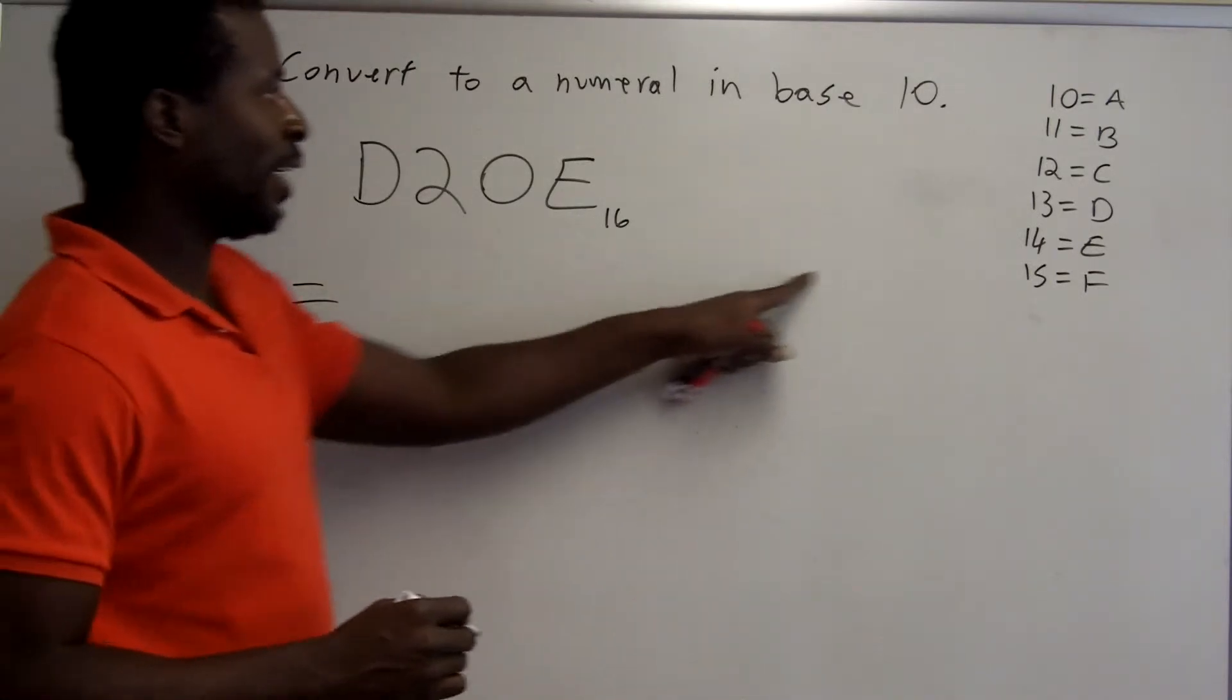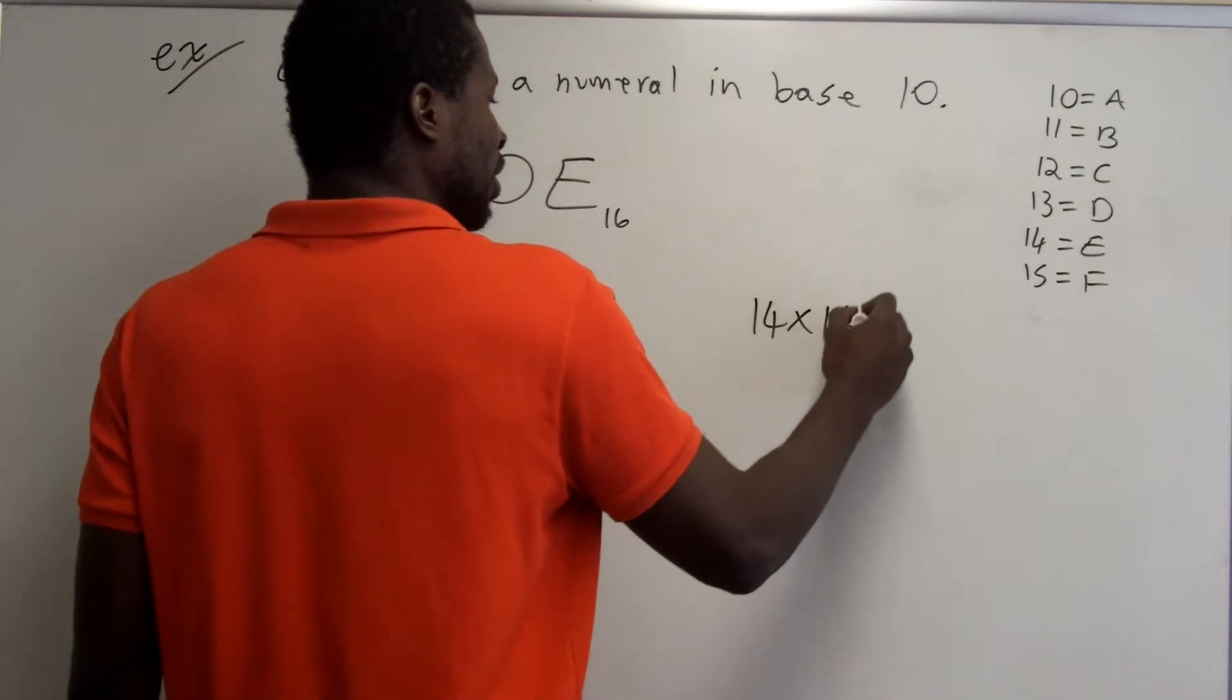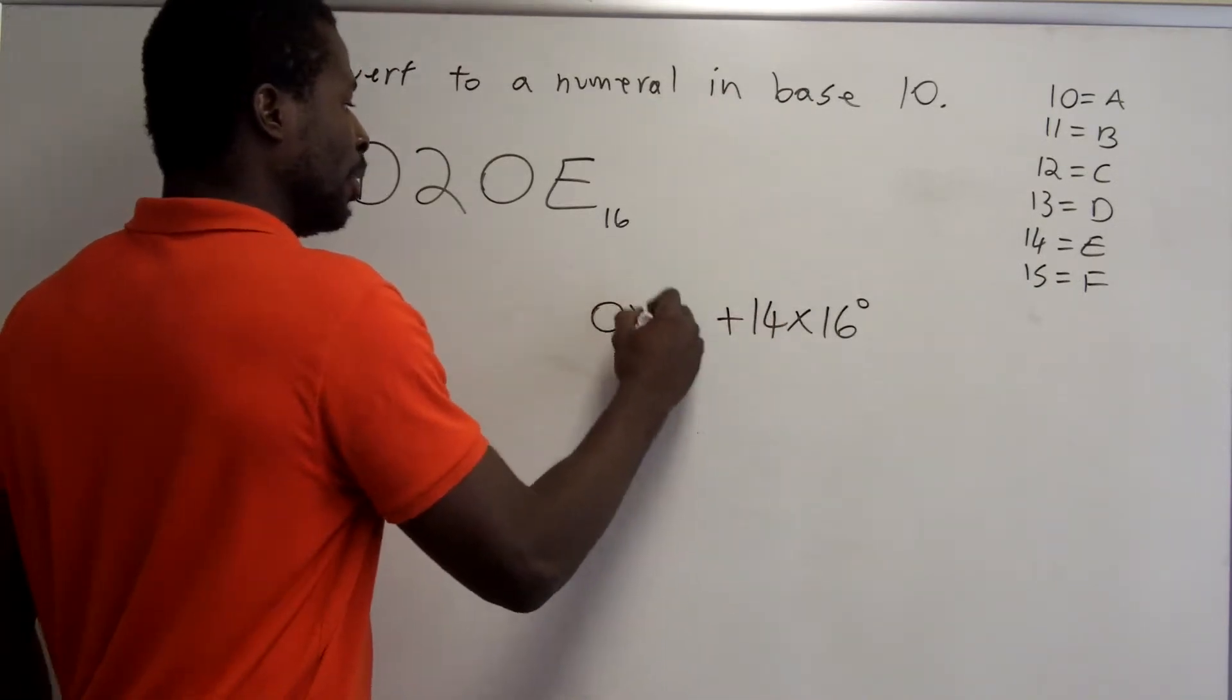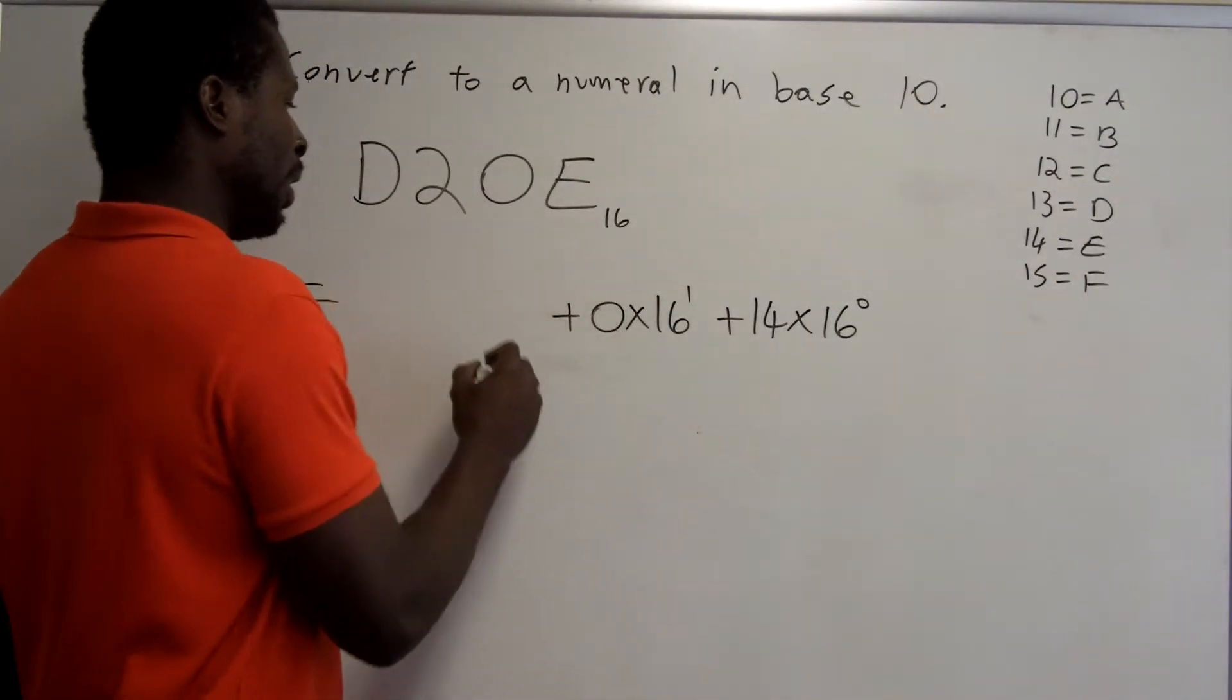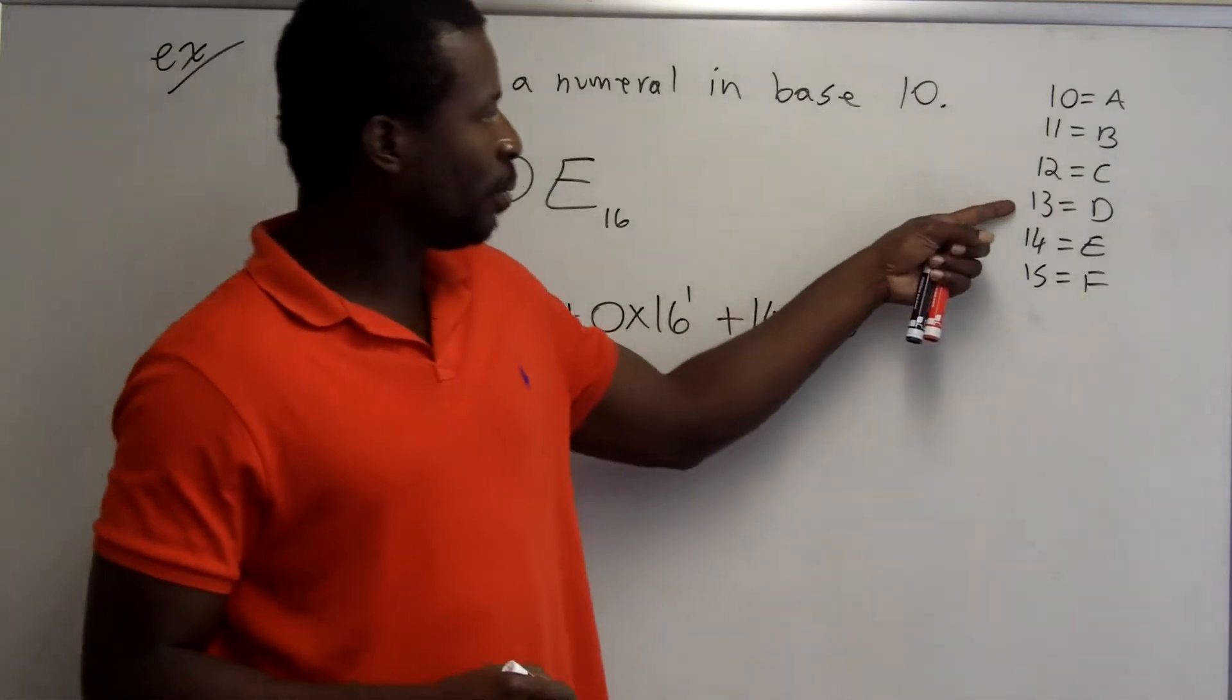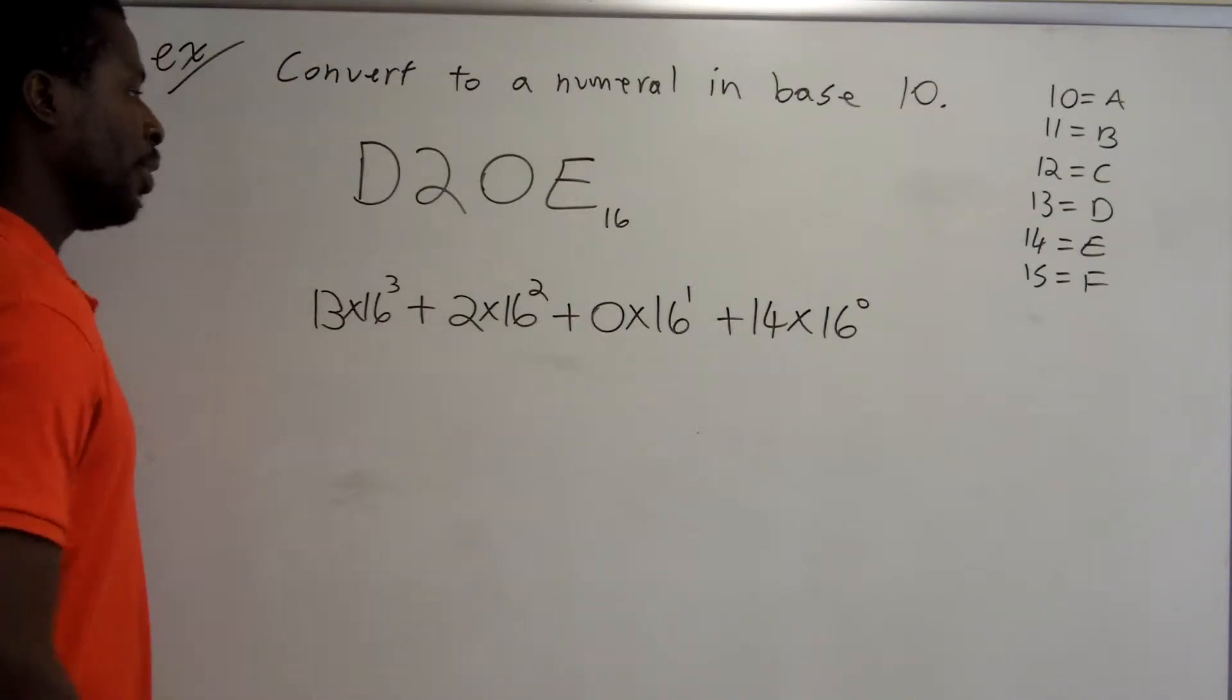The E, E is actually the number 14. 14 is in the 1s place, which is actually 16 to the 0 power. 16 to the 0 power. So this first place is the 1s place. Plus, 0 is in the next place. 0 times 16 to the 1st. 2 is in the next place. That's 2 times 16 to the 2nd power. And the last place, there's a D there. Well, D is the number 13. So this is 13 times 16 to the 3rd power.